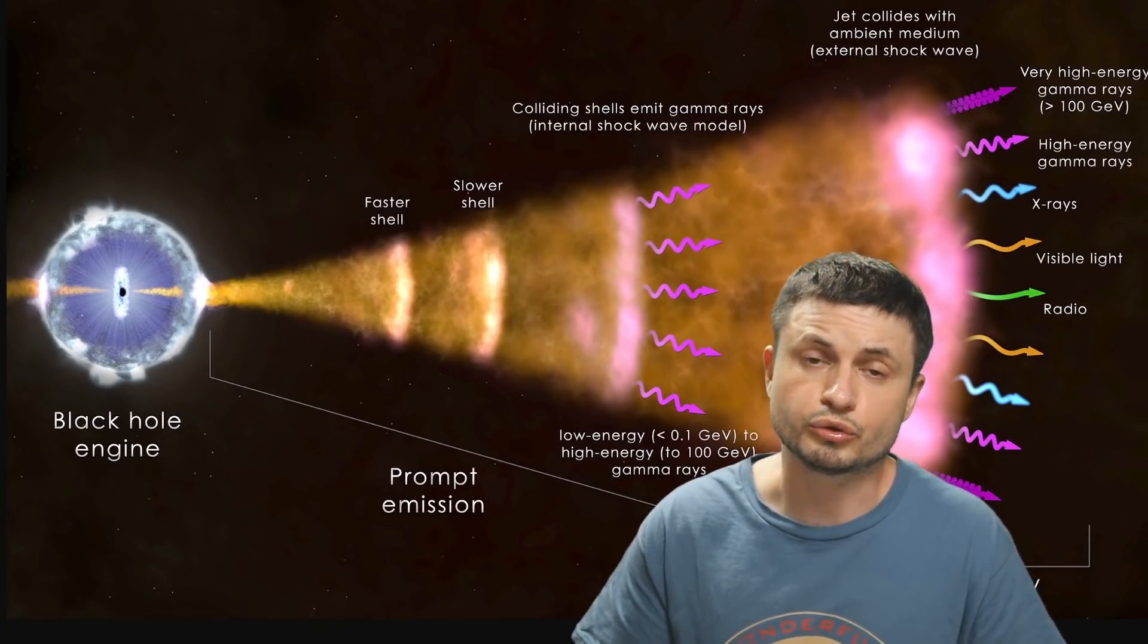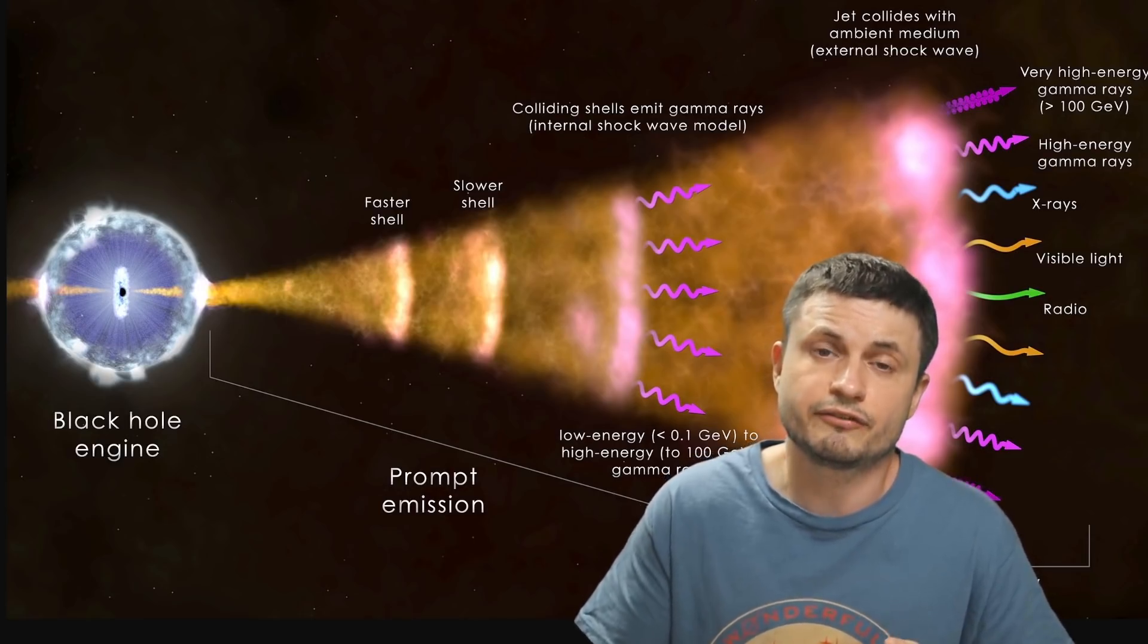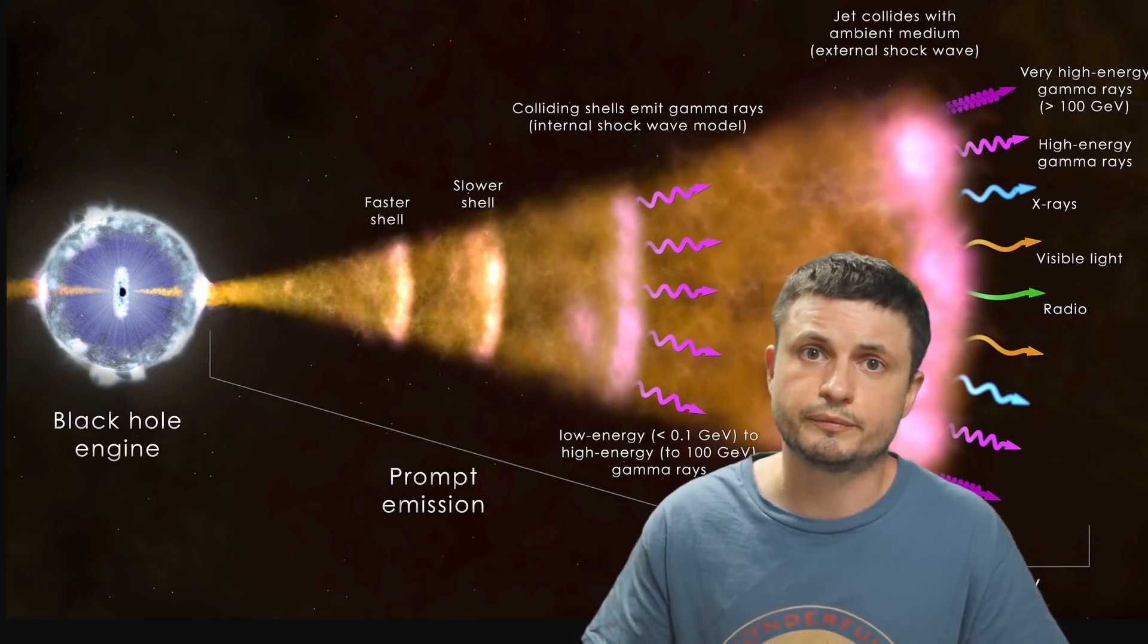But all of this extra energy and all of this extra power, according to this paper, was basically taken from the ergosphere, from the rotational energy of the black hole. Which of course, if correct, means that we now have an observational proof.